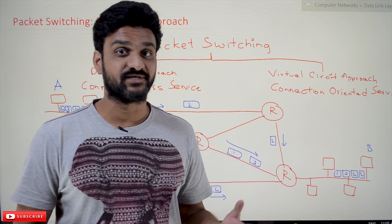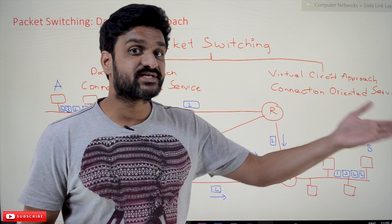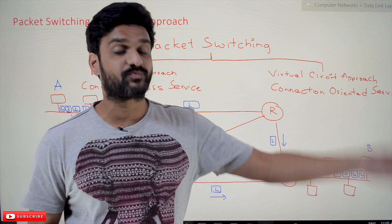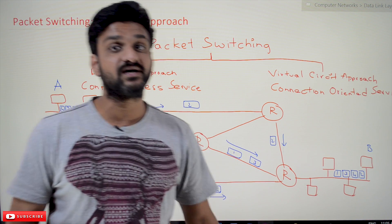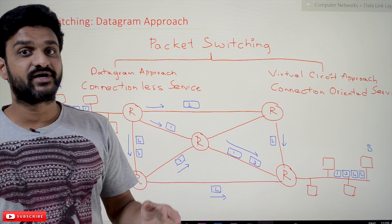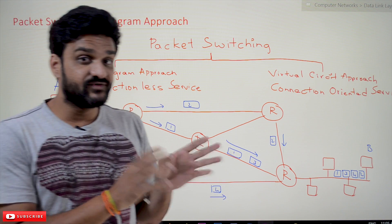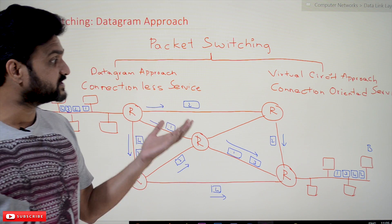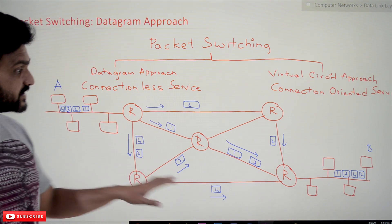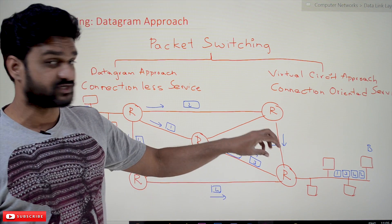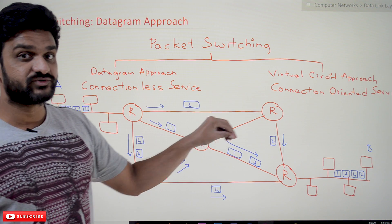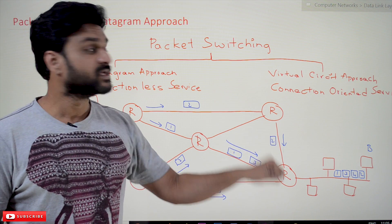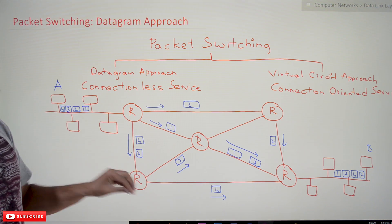In our previous classes we have discussed about routing and forwarding, which are services provided by the network layer. That video is very important for understanding what we're going to discuss in this class, because this is the same diagram and example we used in our previous video.